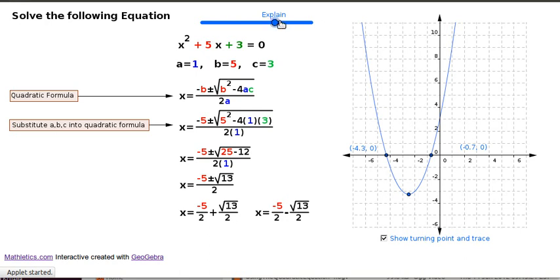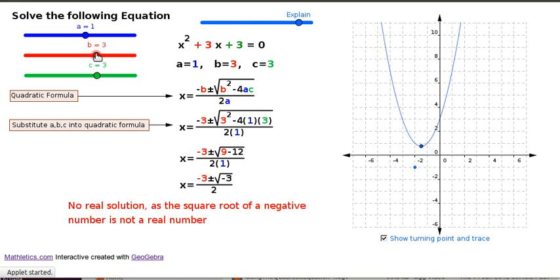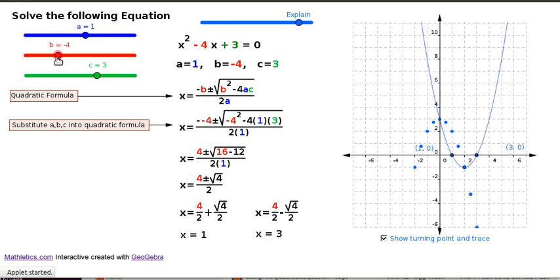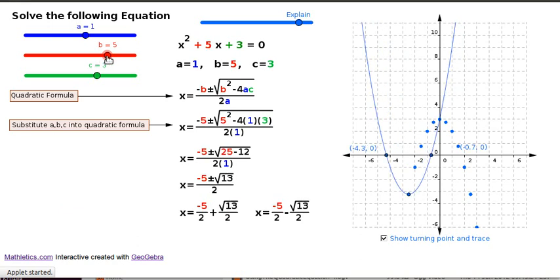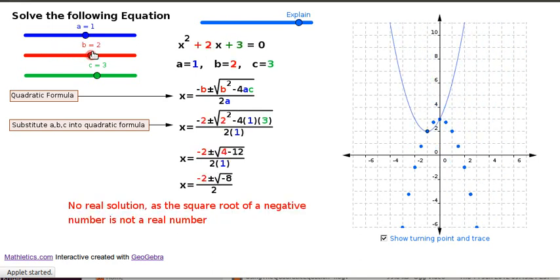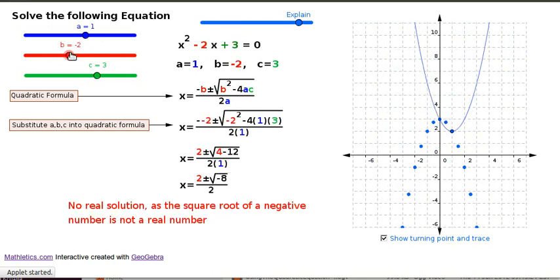So what's interesting is you can change these values and all the maths changes in the solution. And you can also see that in the graph here that the turning point is moving. And it's interesting to know that when you change the b value in nice steps of 1, that makes the turning point carve out a parabola, which is an interesting thing.